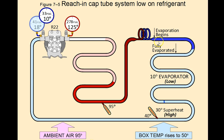Evaporation begins very early in the coil, it's fully evaporated, and then we start to pick up superheat. So we start at 10 degrees Fahrenheit, then we pick up more and more superheat until we get all the way down to where we're measuring at the outlet of the evaporator. We have a 10 degree evaporator temperature with a 40 degree line set temperature, giving us 30 degrees of superheat — which is super, super high.